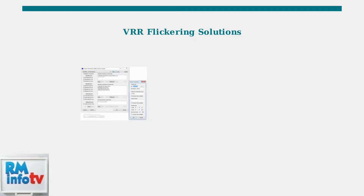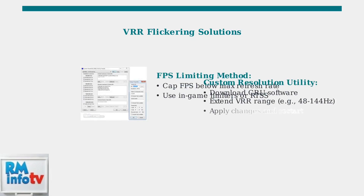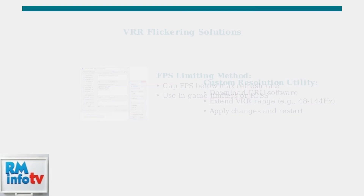Variable refresh rate flickering occurs when frame rates fluctuate outside the VRR range. Two effective solutions are limiting game FPS to maintain consistency, or using the Custom Resolution Utility to expand the VRR range.